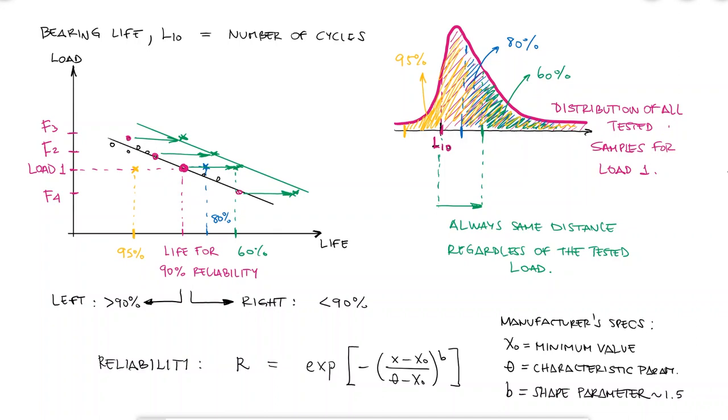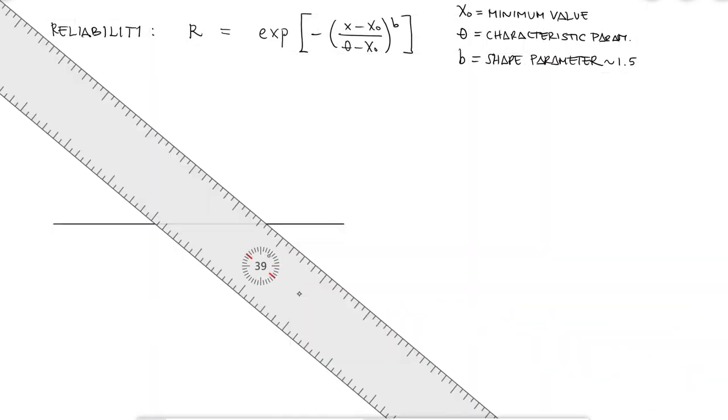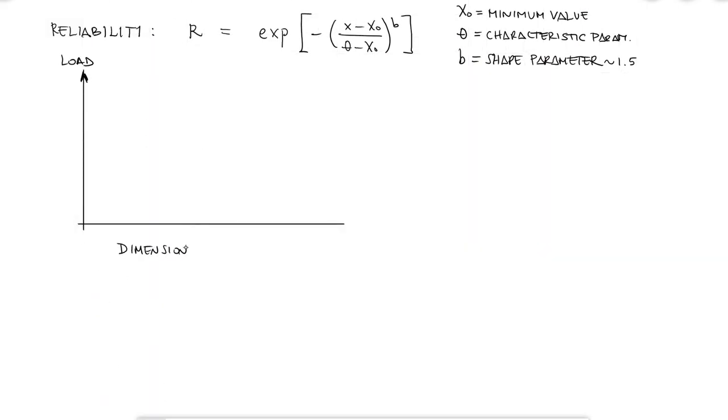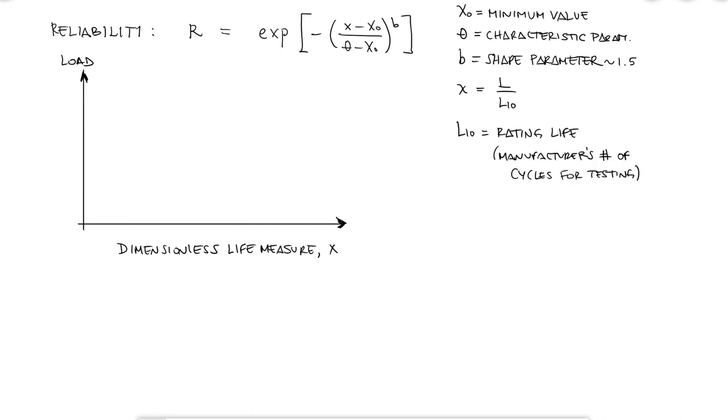Finding the Weibull parameters is part of their testing procedure. To understand what x0 means, we first need to understand what x in general means. The same load versus life plot we've been working with also works for when life is substituted by a dimensionless variable x. This dimensionless life measure x is defined as L over L10, the rating life from the catalog. X10 would be 1, as it would be L10 over L10.